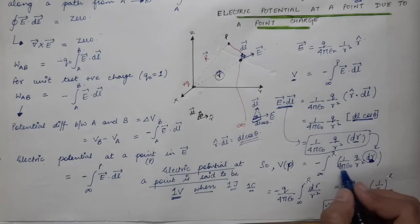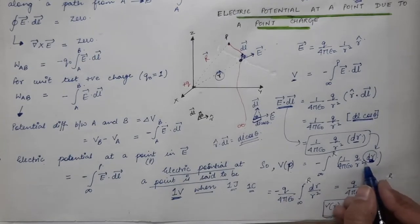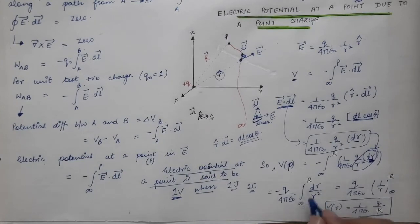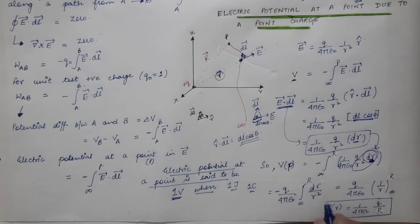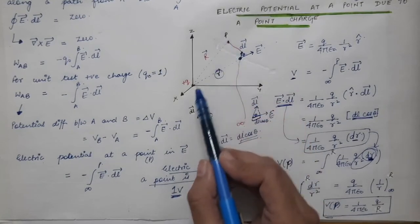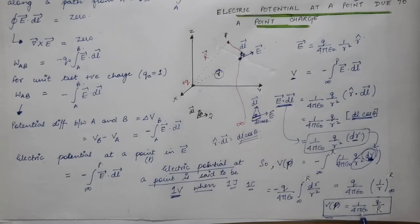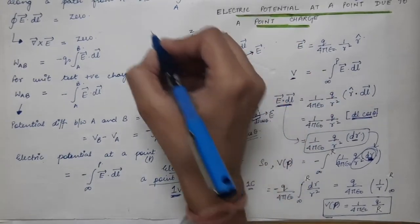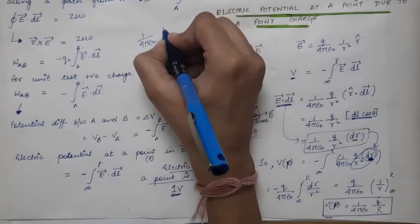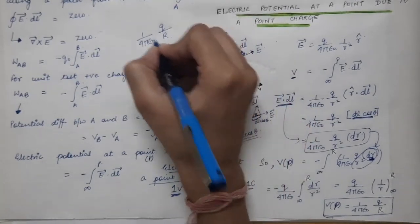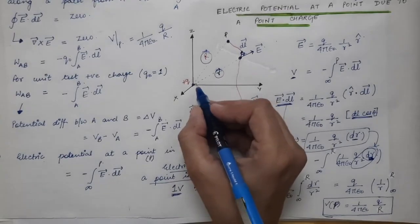On solving the integration, the electric potential at point P due to source charge Q comes out to be equal to Q/(4πε₀R), where R is the distance of point P from the source charge. So the potential at P due to a point source charge is 1/(4πε₀) times Q divided by the distance R of that point from the source charge.